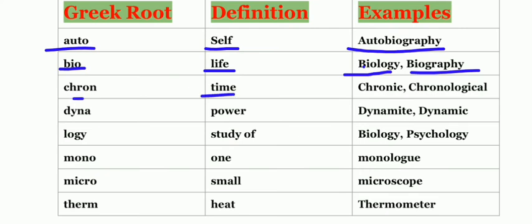Next one is chron which means time, for example, chronic, chronological. The next one is dyna which means power, for example, dynamite, dynamic.